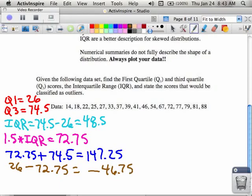Okay, so are there any numbers in our data that are more than 147.25? No. Are there any values that are less than negative 46.75? No. There are no outliers.